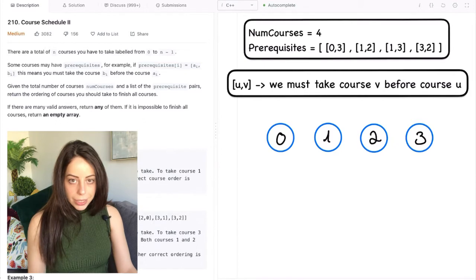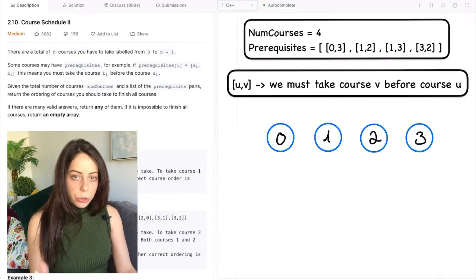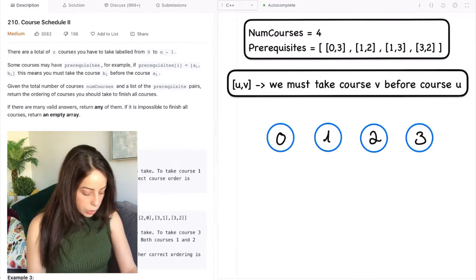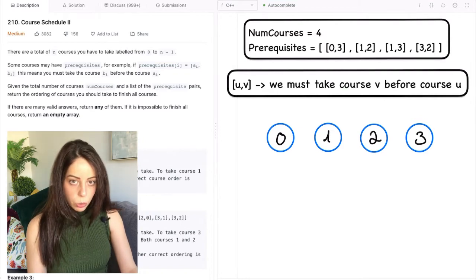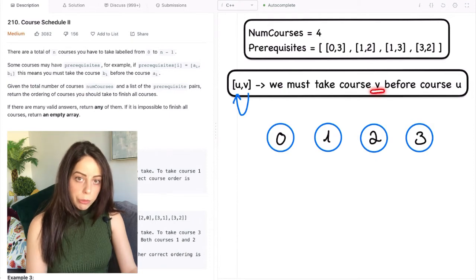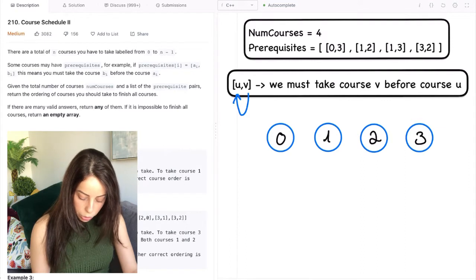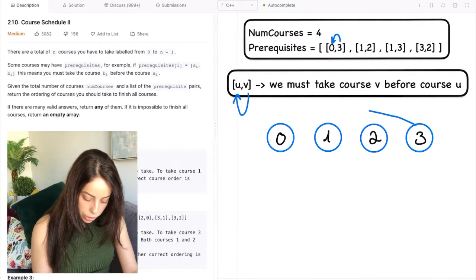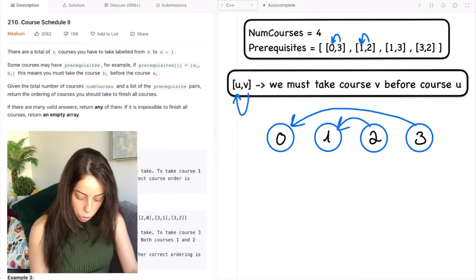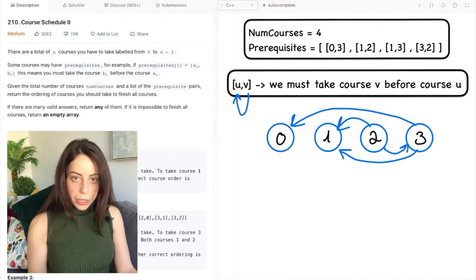Now when we deal with dependencies and sets of rules that kind of define how some elements connect to others, we really should start to think about graphs and how we can describe the problem in graph form. In this case we can say that each course is a node and there is an edge from node v to node u if we have to take course v before we take course u. So according to this logic we need to connect node 3 to node 0. So let's add an edge here. And node 2 to node 1. Node 3 to node 1. And node 2 to node 3.